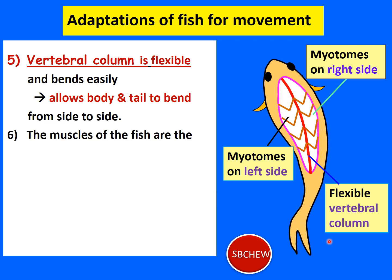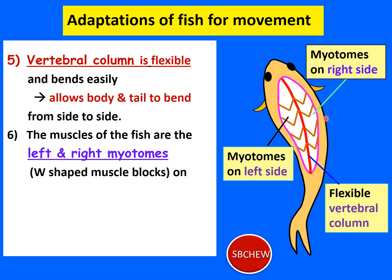The fish has muscles on the right and left sides of its vertebral column called myotomes. The left and right myotomes are W-shaped — this pattern is visible when the upper part of a fish is cut away. The myotomes are found in segments; there are many myotome segments on each side, not just one single block of muscle.